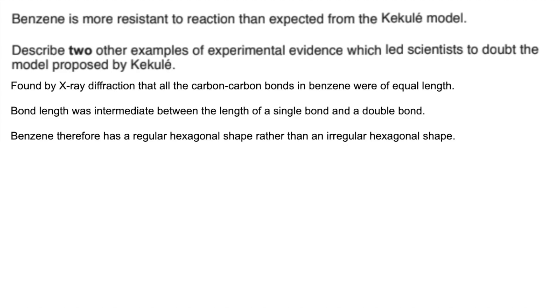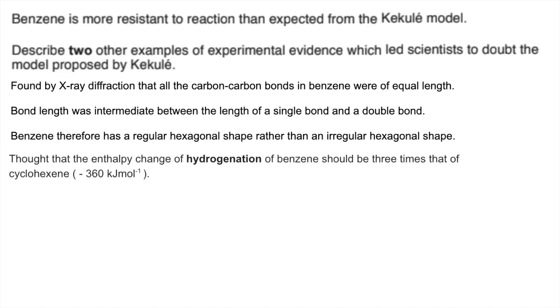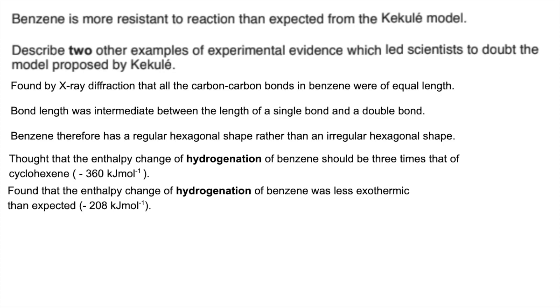The other piece of evidence is to do with enthalpy change of hydrogenation. They thought that the enthalpy change of hydrogenation should be three times that of cyclohexene — it would have been minus 360 kilojoules per mole had that been the case. When they measured it, it was found to be less exothermic than expected at minus 208 kilojoules per mole.